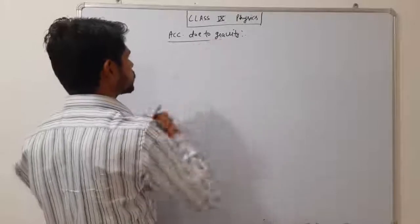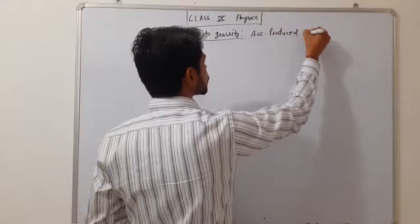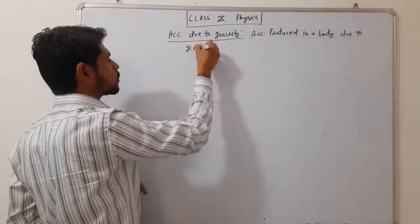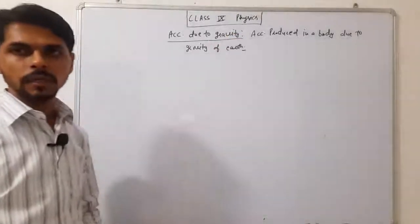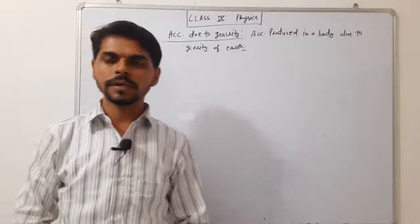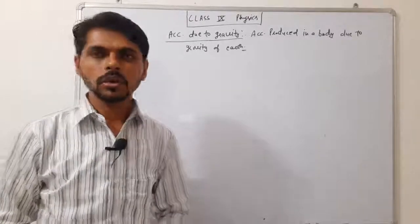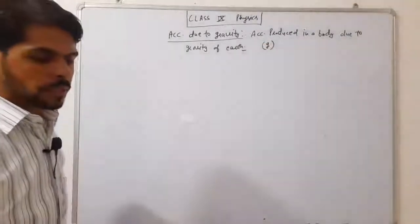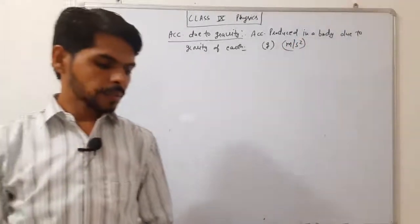Acceleration due to gravity — acceleration produced in a body due to the gravity of Earth. Earth की gravity की वजह से जो body free fall में नीचे गिर रही है, उसमें जो acceleration आएगी, that is called acceleration due to gravity. Acceleration due to gravity का जो symbol होता है, that is small g, and its unit is meter per second square.